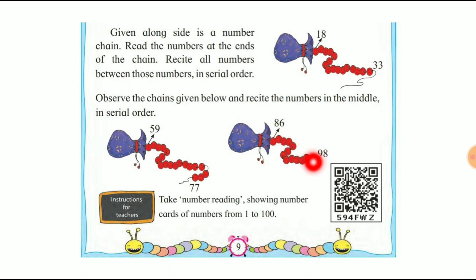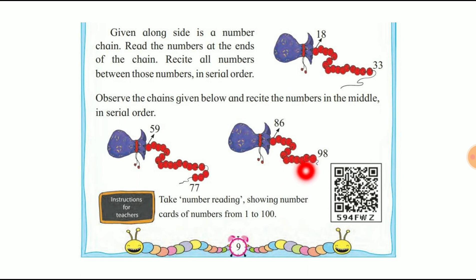Next chain: 86 is first number, last number is 98. So: 86, 87, 88, 89, 90, 91, 92, 93, 94, 95, 96, 97, 98. Last number is 98.